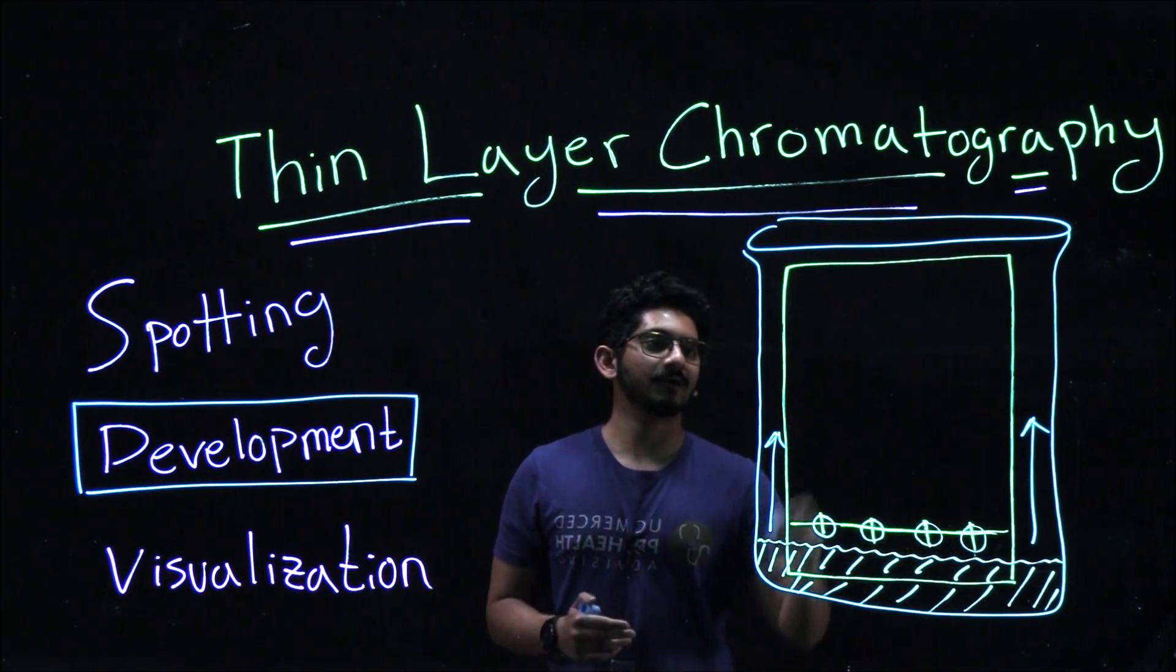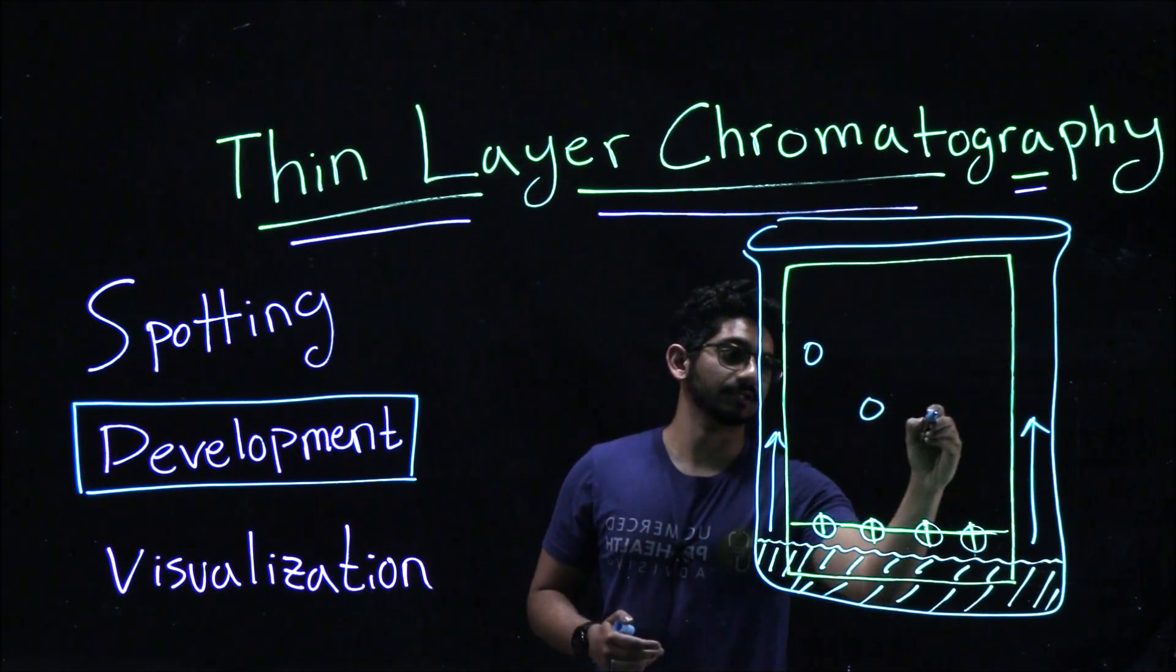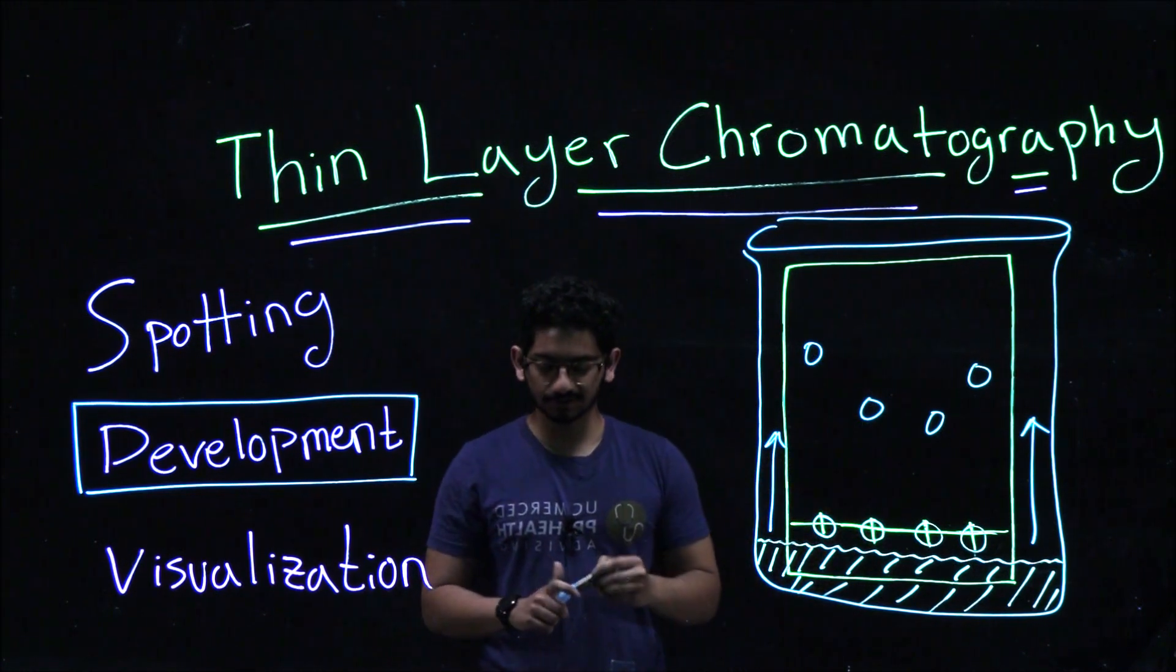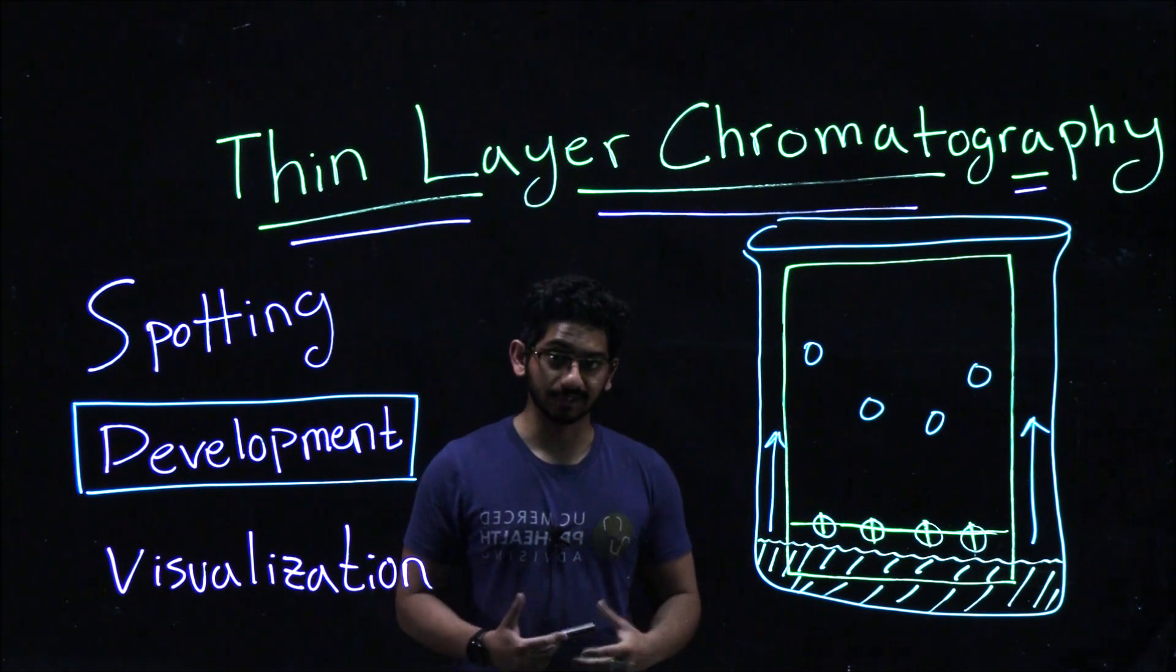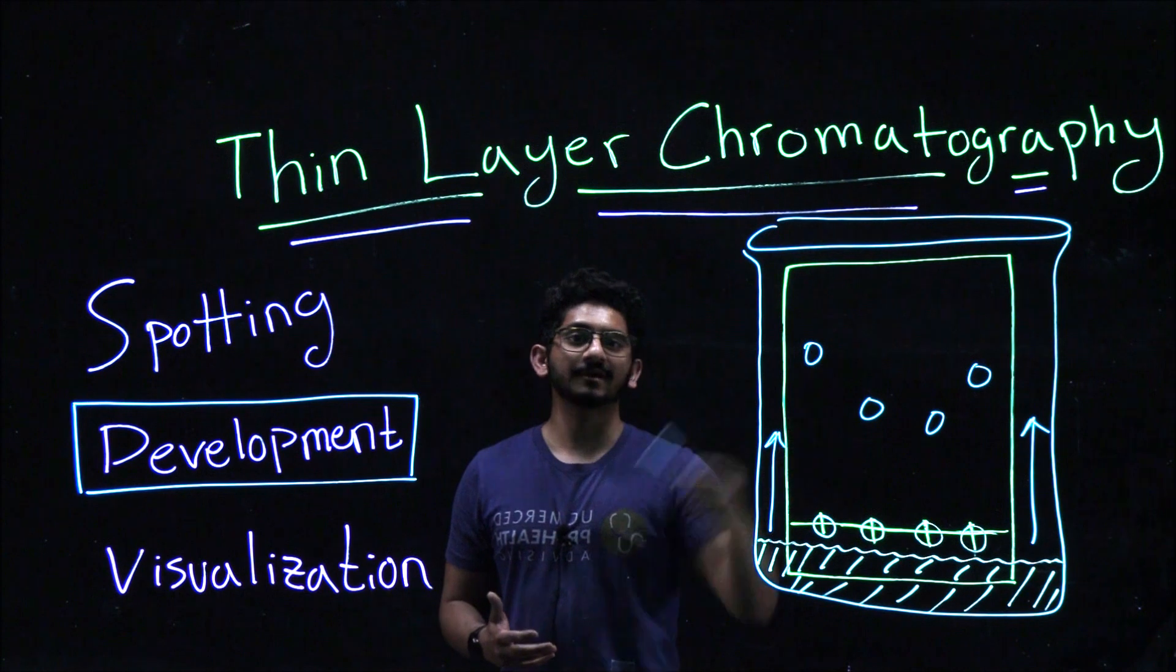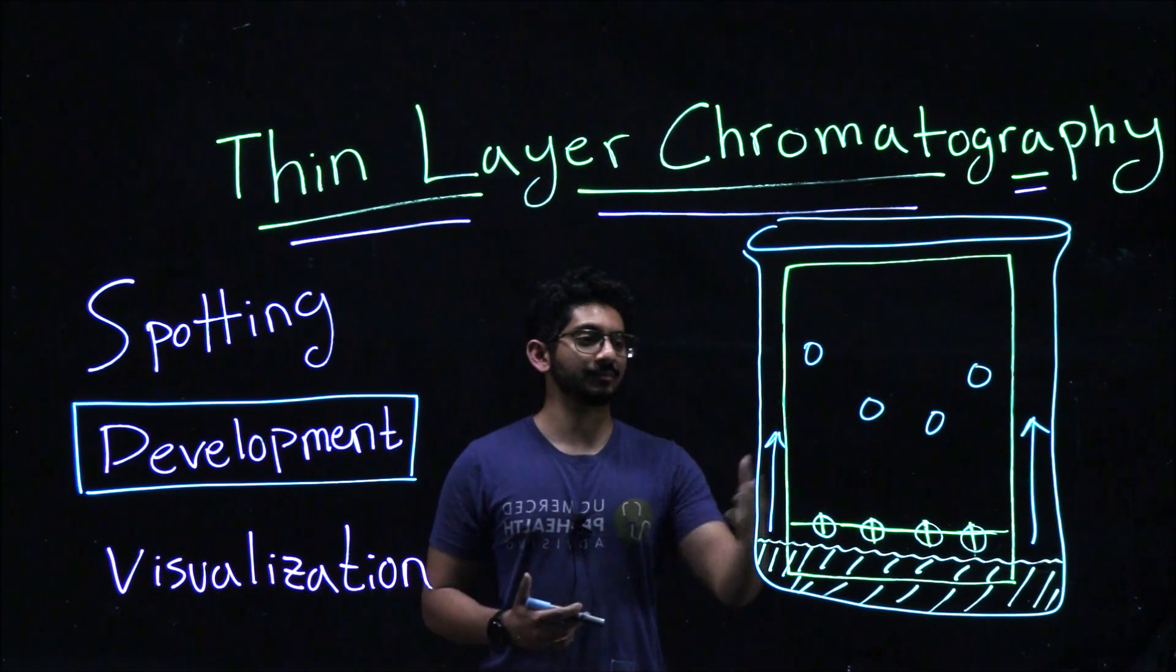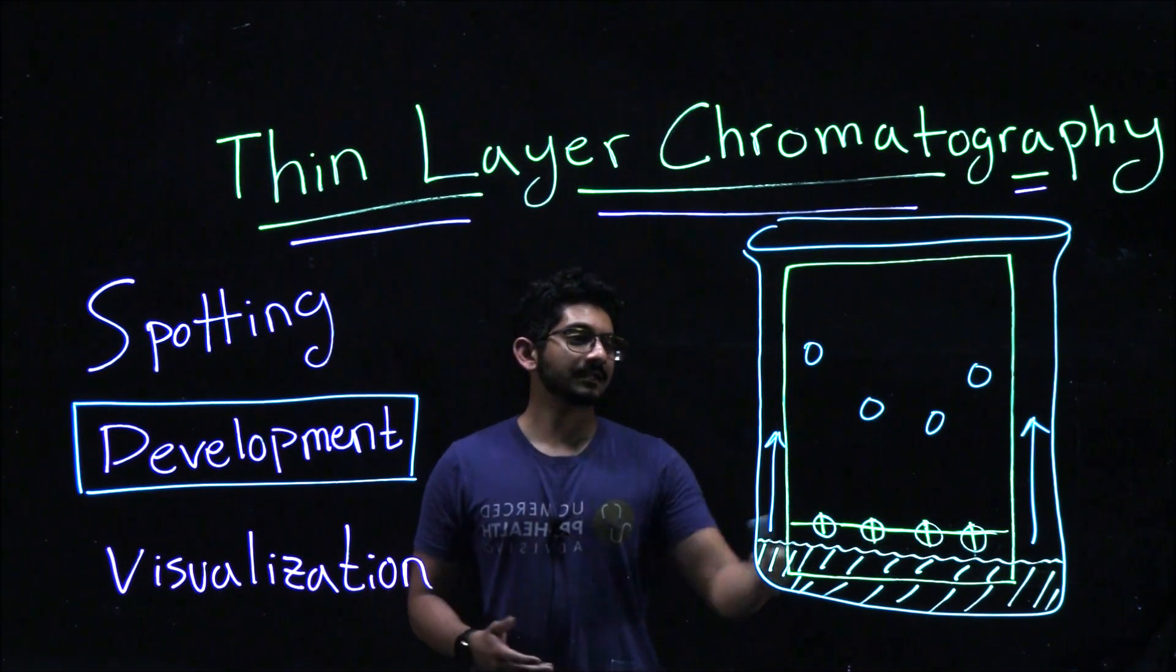These different compounds can have different RF values, which we'll cover later, and based on the distance they travel, you can tell a lot about the relative polarities. If your mobile phase is an organic solvent, it is nonpolar, which means your top spot, the one that moved the farthest, will be more nonpolar compared to the rest because of its affinity for the nonpolar mobile phase.